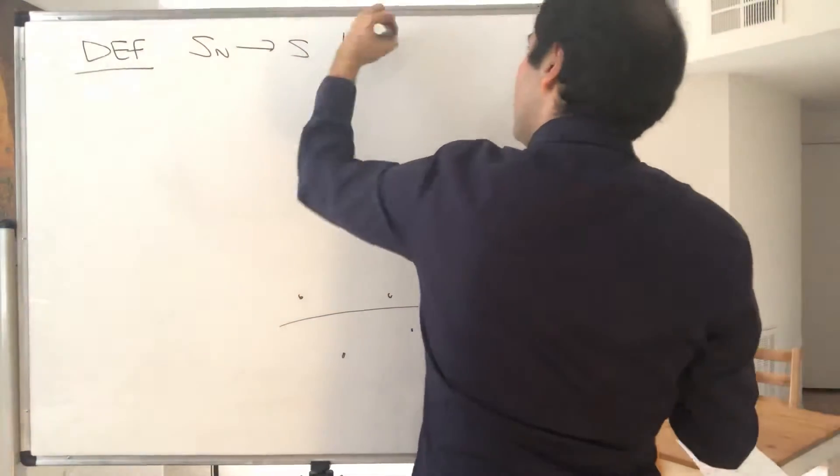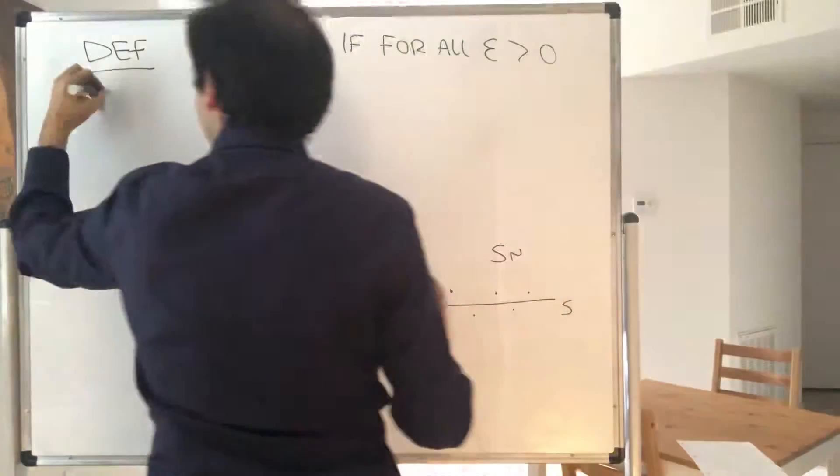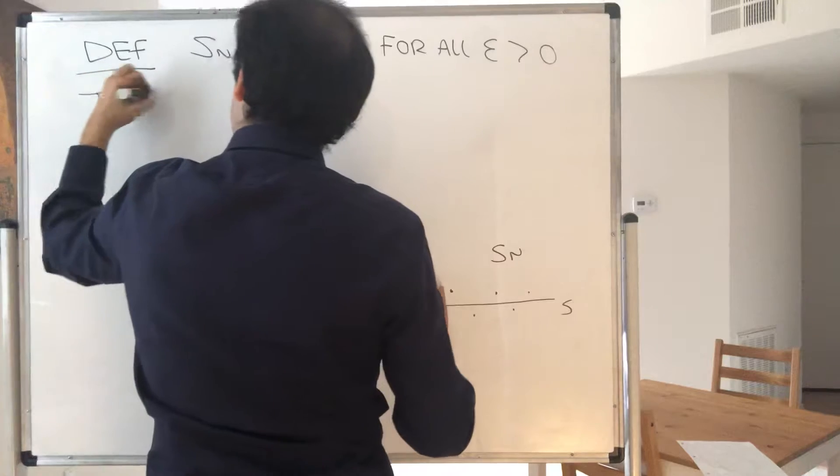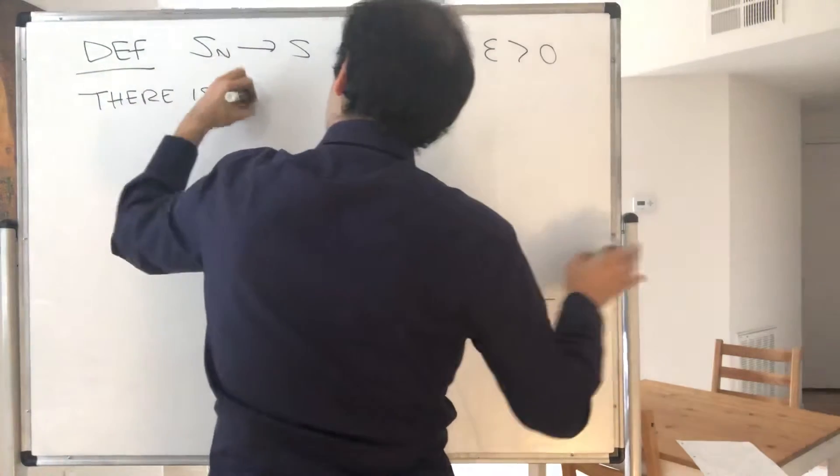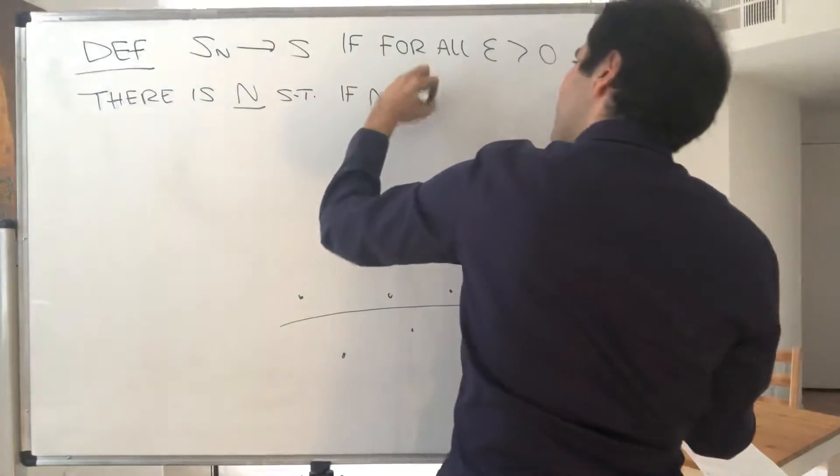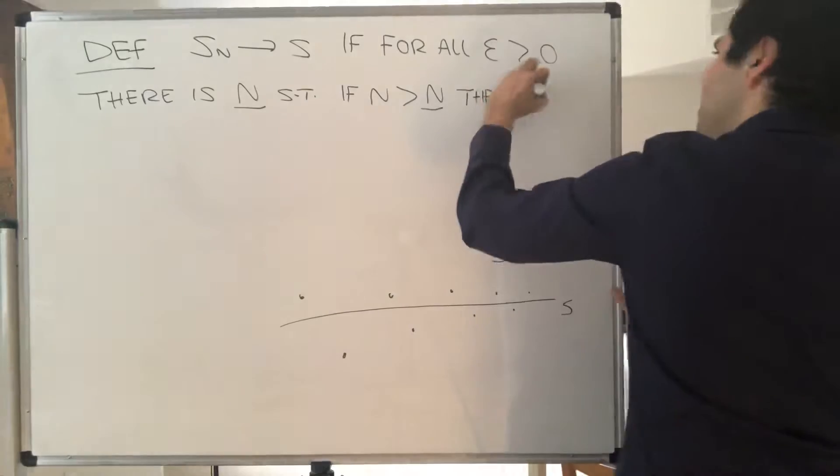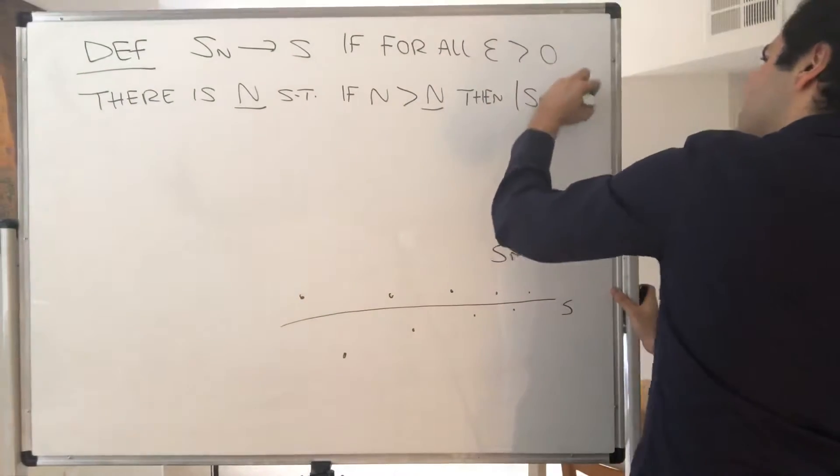if for all epsilon there is capital N such that if n is bigger than capital N, then Sn minus S is less than epsilon.